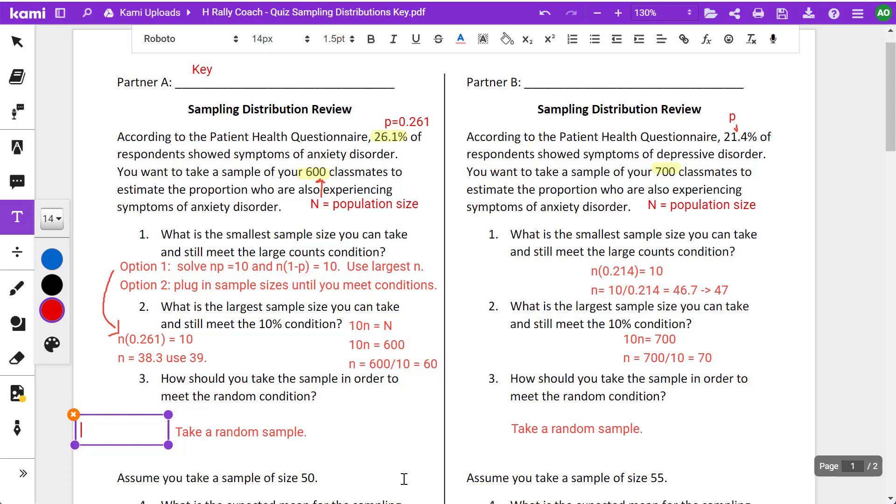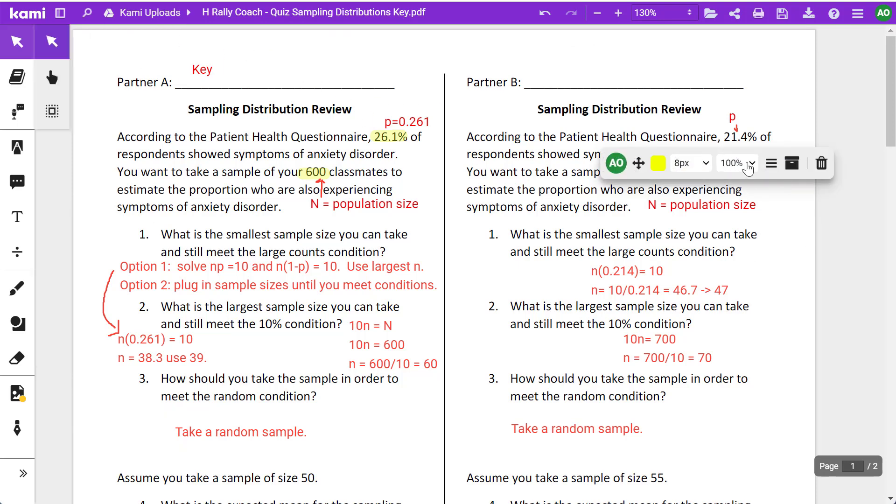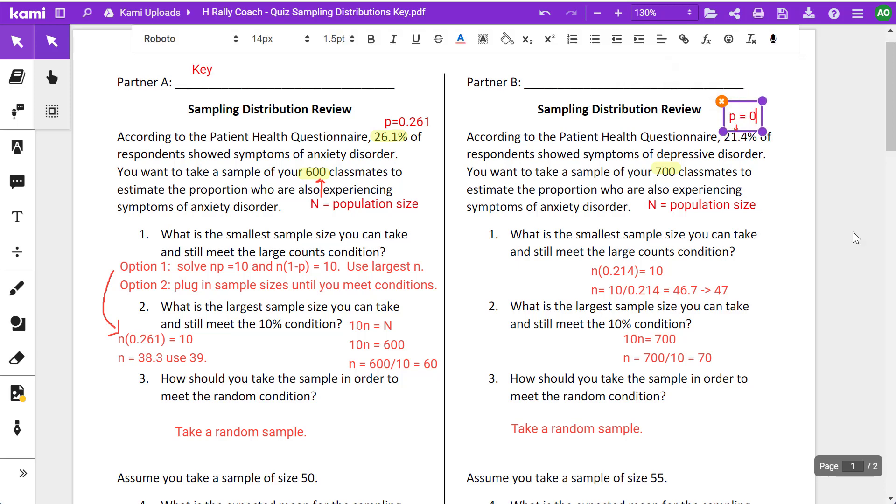How should you take the sample in order to meet the random condition? Take a random sample. And then on the right side, we have the patient health questionnaire again, and this is depressive disorder. And this one is 0.214. So I'll change that to 0.214. Again, you always want to use the decimal, not the percent version. And your population in this instance is 700 classmates. So N is 700.